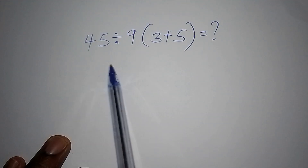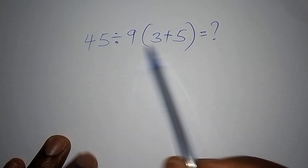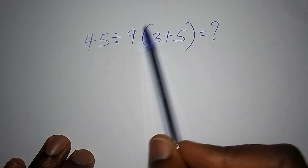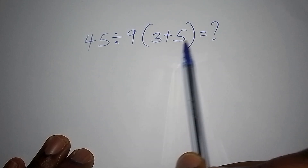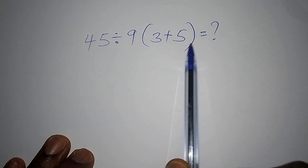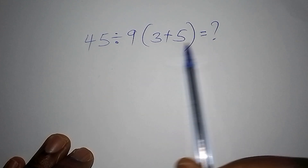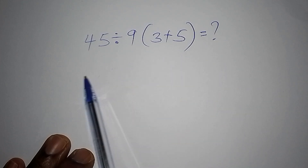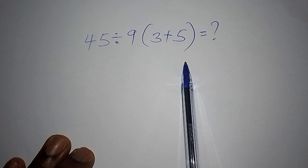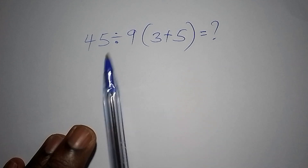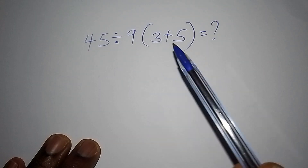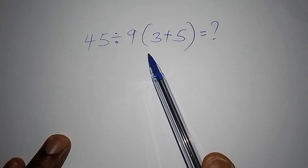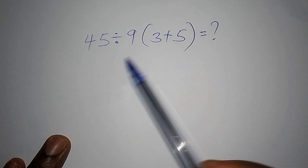Hello, today I want us to work out this maths problem. We have 45 divided by 9, into bracket 3 added to 5, then we close the bracket. Before we work out this maths problem, please pause the video, try to work it out on your own, and check the answers that you get.